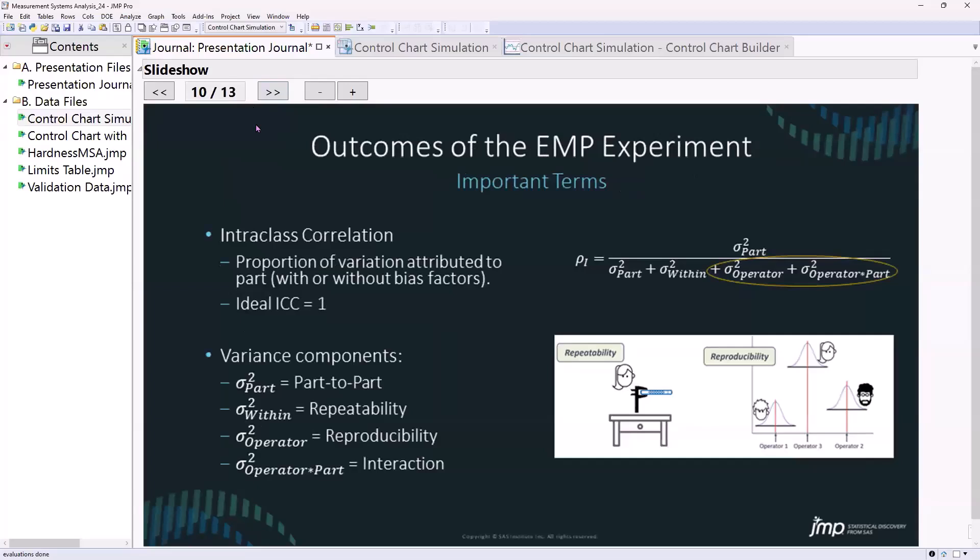Okay, just a quick run through on outcomes, and then I will spend the rest of the time in JUMP talking about how to do this. Intraclass correlation, we already talked about that. It's the portion of variation attributed to the part with and without bias factors. We'll talk about that. We also are interested in variance components of the gauge.